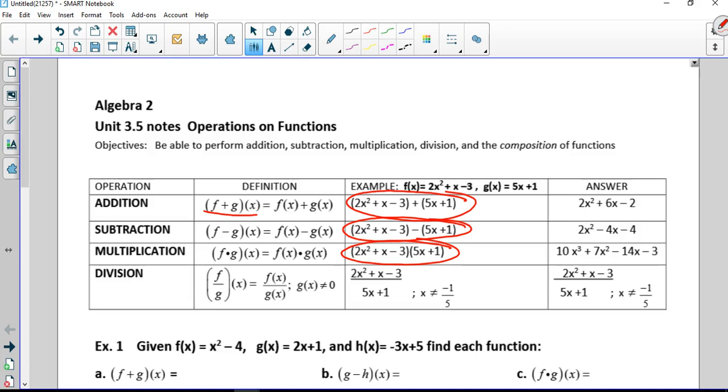For example, if I see f plus g of x, it simply means we're going to take whatever f of x is and add g of x. In our example, f of x is a quadratic and g of x is a line. We're going to add them together, join like terms like we always have. So 1x plus 5x is 6x, negative 3 plus 1 is negative 2, and the 2x squared just comes over. That's our new polynomial.